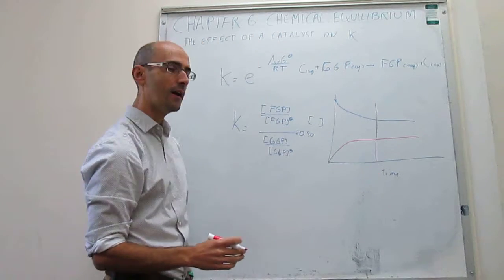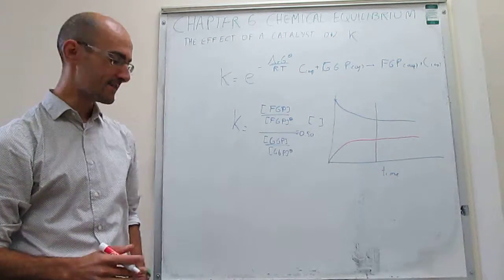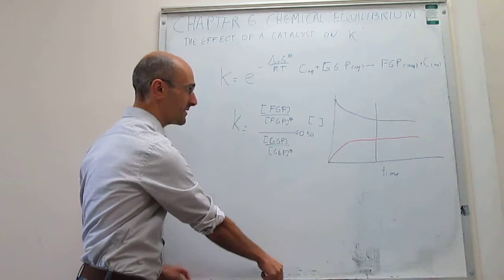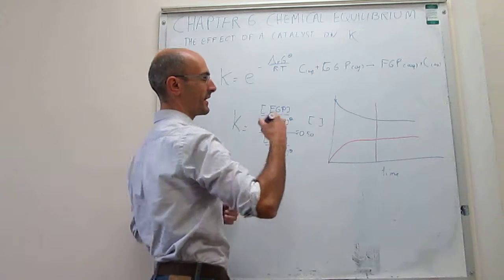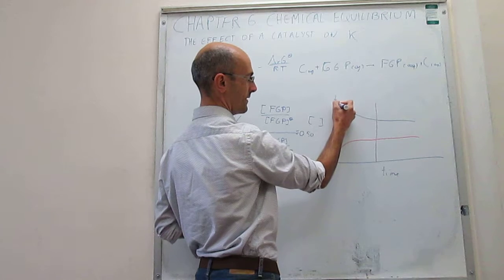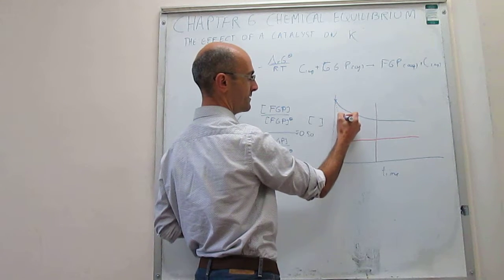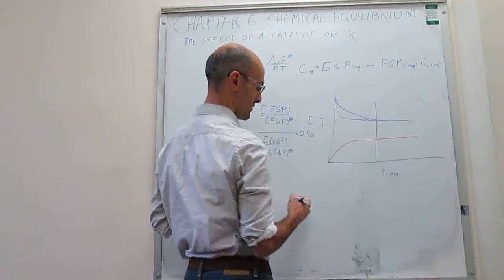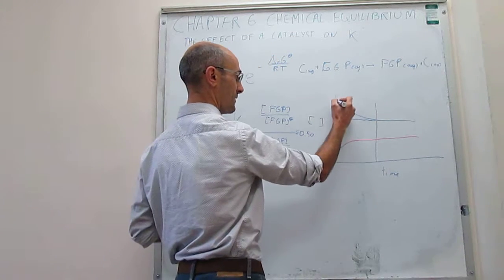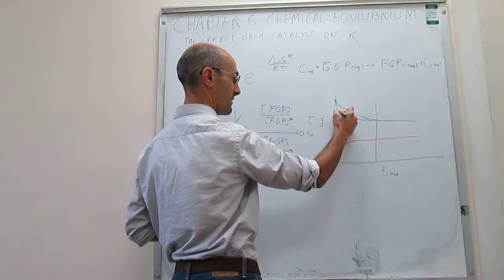That's what will happen if you don't have a catalyst. Now if you add the catalyst, what will happen is that you will reach that equilibrium much sooner. The catalyst will make the reaction faster, but the situation of equilibrium does not change. That will be what happens when you have a catalyst.